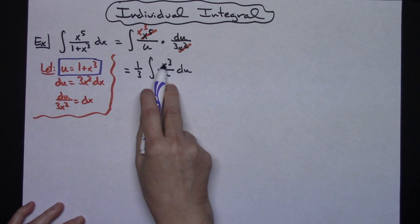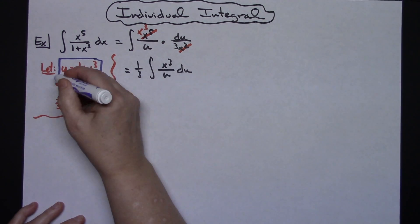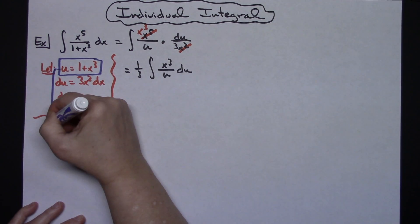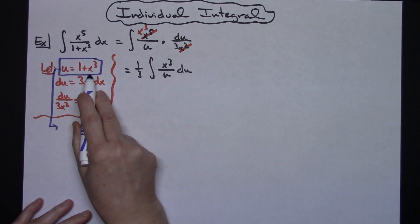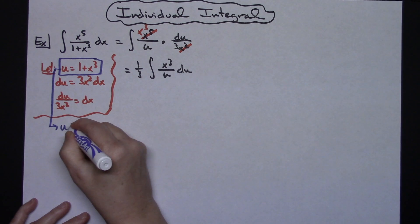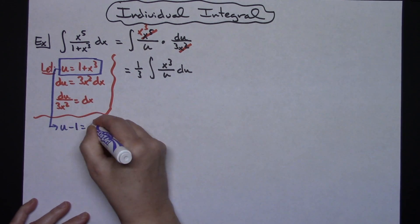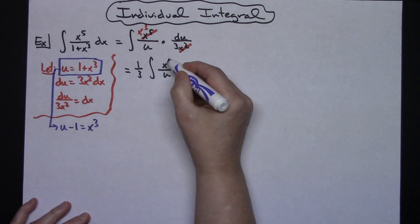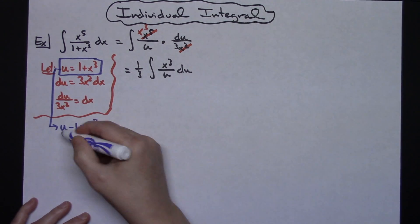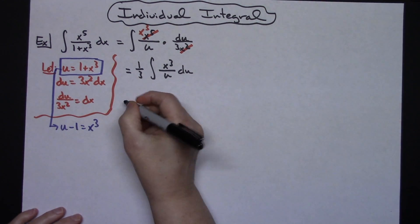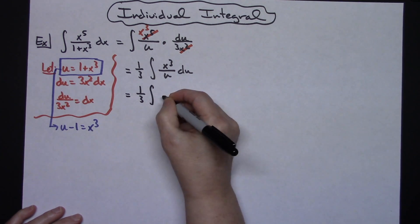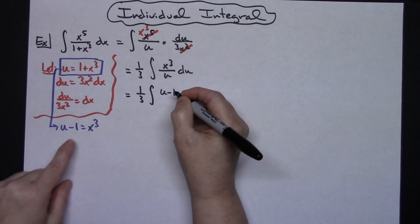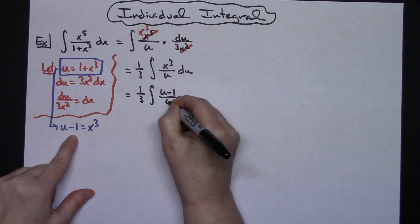If you come back over here and take a look at what you originally let u equal, I can solve that equation for x to the third and give myself another substitution. If I take this equation and I solve for x to the third, I'll have u minus 1 is equal to x to the third. Now I'm going to be able to do another substitution right there. I'm going to have 1/3 the integral of u minus 1 over u du.